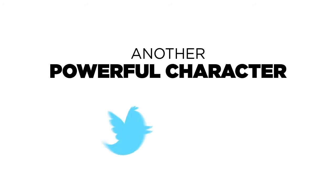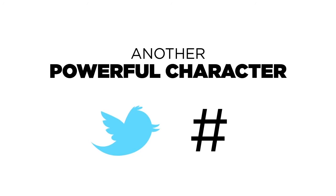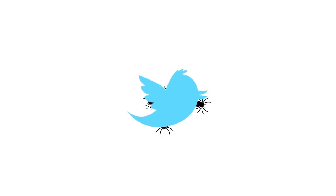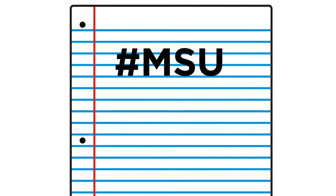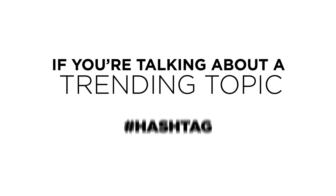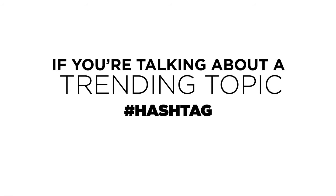Another powerful character in the Twitter lexicon is the pound sign. This symbol precedes what are called hashtags — words or word combinations that Twitter spiders look for to track trending topics. A pound sign in front of MSU, a pound sign in front of U2, and Big Ten are examples. If you're talking about a trending topic, using a hashtag can get your message seen by a significantly greater audience.